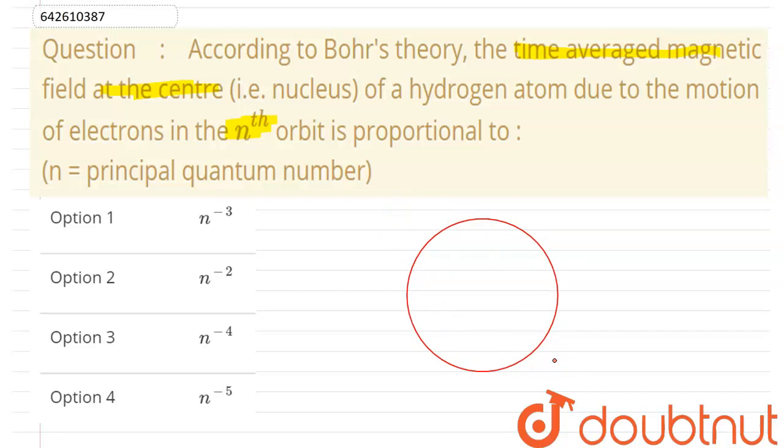Let's suppose this is the circle in which the electron is revolving, this is the electron, and the radius of the circle is r. So if the electron will revolve around the circle of radius r, then current will be induced.